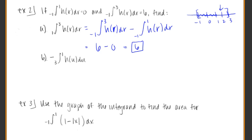For part B, we want the integral from 3 to 1. We just found it from 1 to 3. Swapping those around requires a negative sign out front; but since the original value was already negative, the double negative makes it positive, and the answer is also 6.